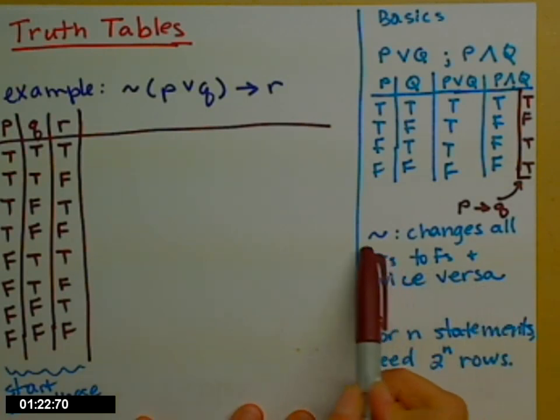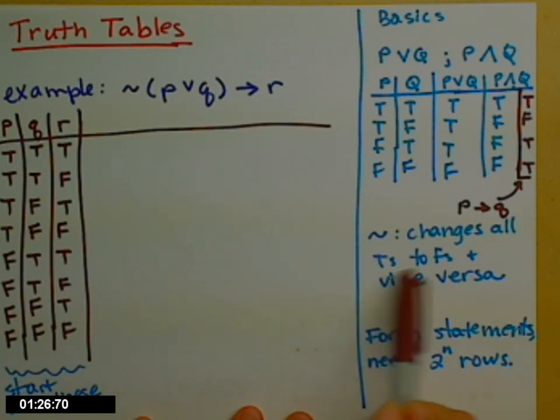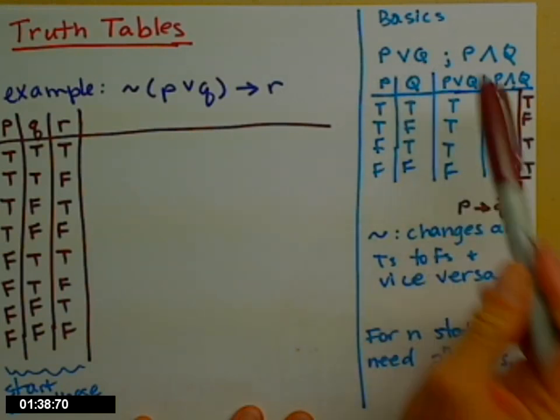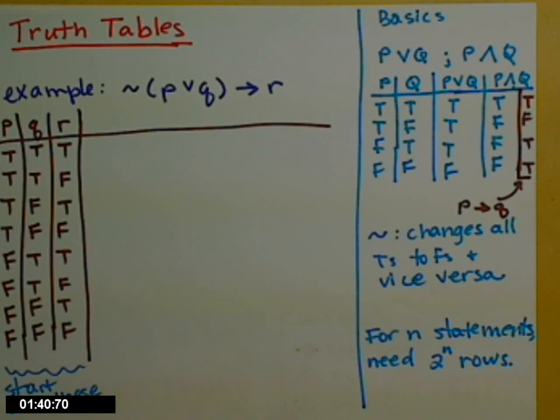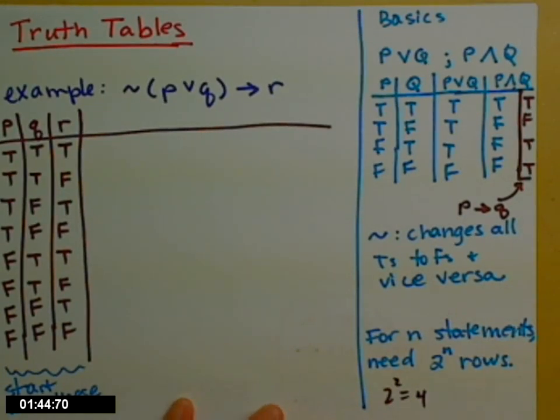My other basics then. The little tilde means that you change, it's the NOT, it changes all the T's to F's and F's to T's. And then to know how many rows you need, if you have N distinct statements, you need 2 to the N rows. So in my little table here, I have two statements, P and Q, so I need 2 to the second rows, 4, which is what I have.